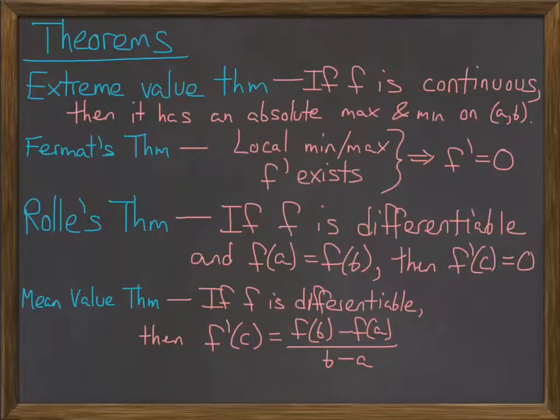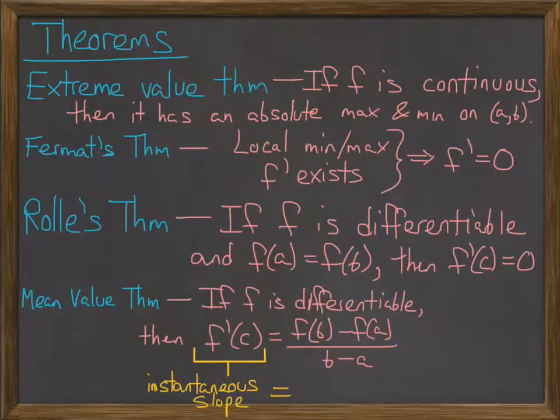And you can think of this as saying the instantaneous slope at some point has to be equal to the average slope over that interval.